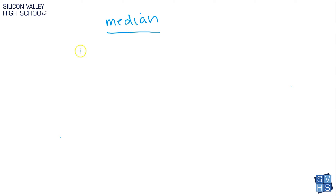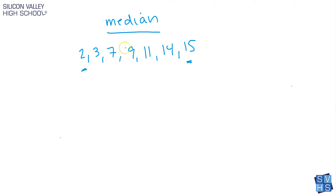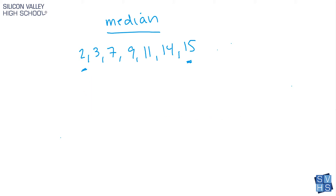For the median, you'll have a data set like two, three, seven, nine, eleven, fourteen, fifteen, and they'll ask for the median. All you do is line them up from least to greatest. If the data set is given scrambled — like two, fifteen, seven, three, eleven — your first step is to put them in order. You cannot find the median until the values are arranged from least to greatest.